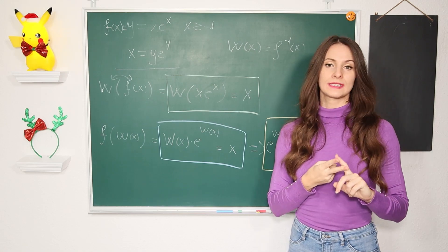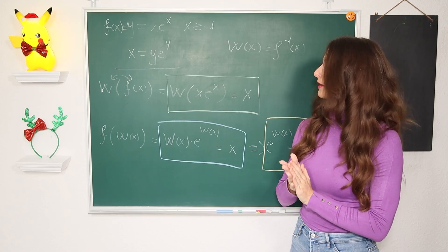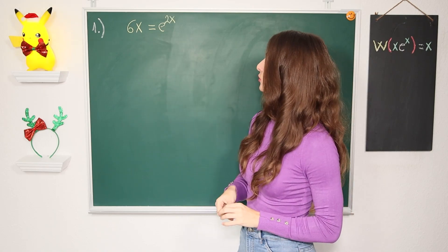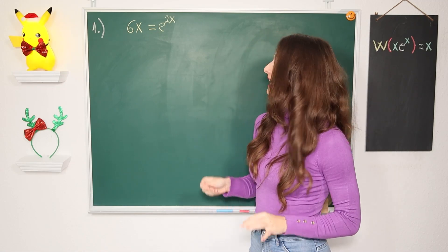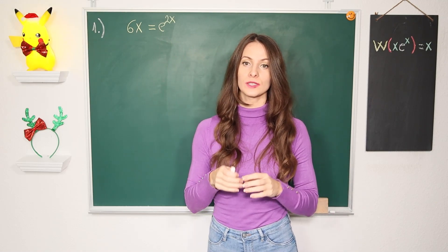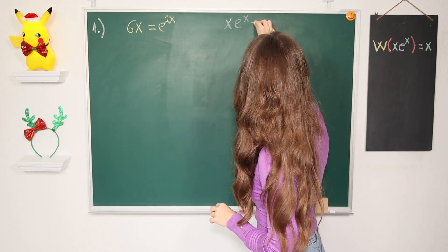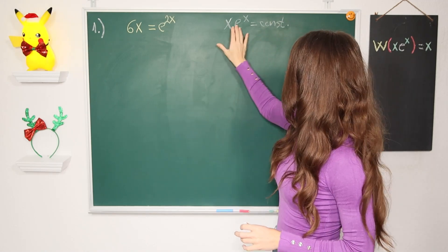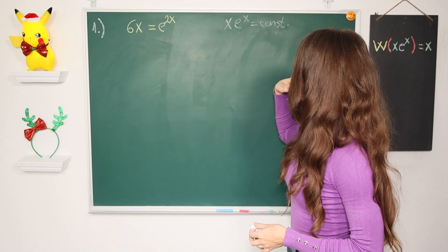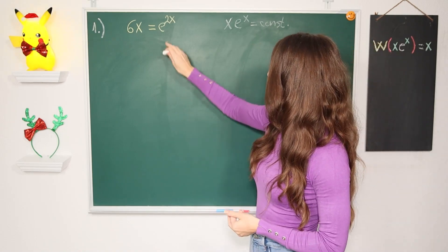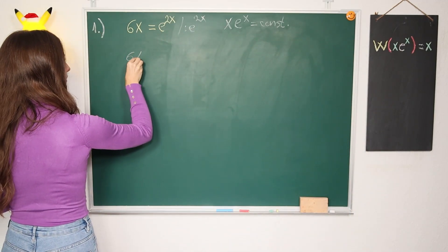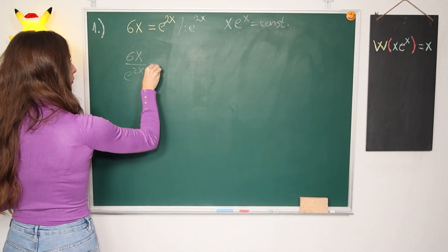So I've shown two important identities for the Lambert W function. Our first example is: solve 6x = e^(2x) using the Lambert W function. Every time you want to solve an equation like this, you want to reach the form x·e^x = constant — all variables on the left, a constant on the right. Our first step is to divide both sides by e^(2x), giving 6x / e^(2x) = 1.